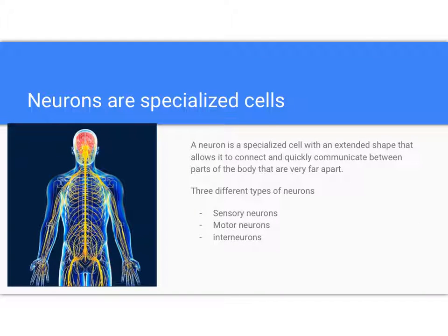Because neurons have this important function of communicating between parts of the body that can be very far apart, they have an extended shape, which we'll discuss in much more detail. Here you can see in this diagram the extent of many different neurons in the nervous system, both the peripheral and central nervous systems, which you've heard about in other tutorials.